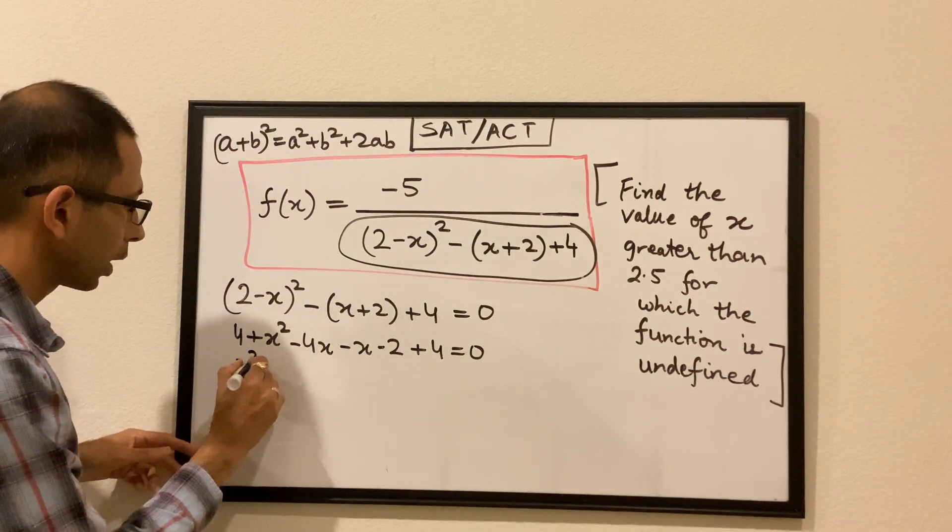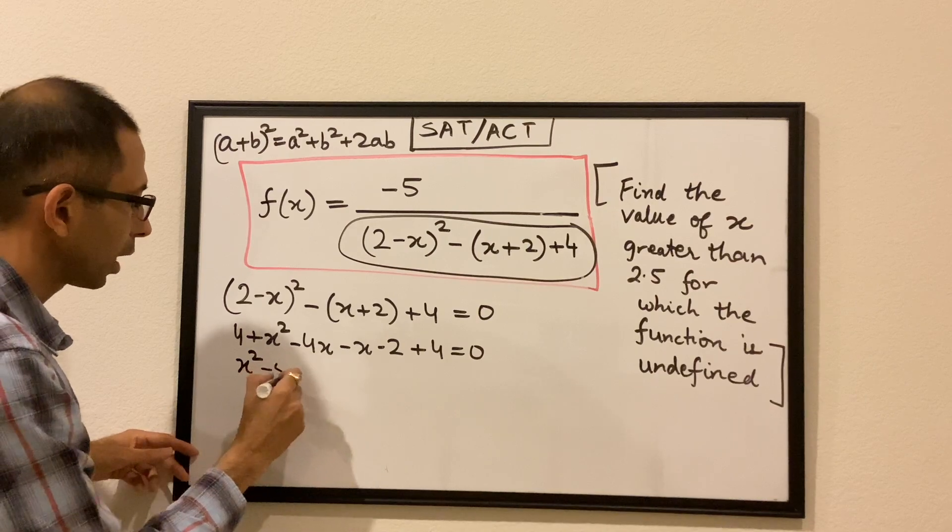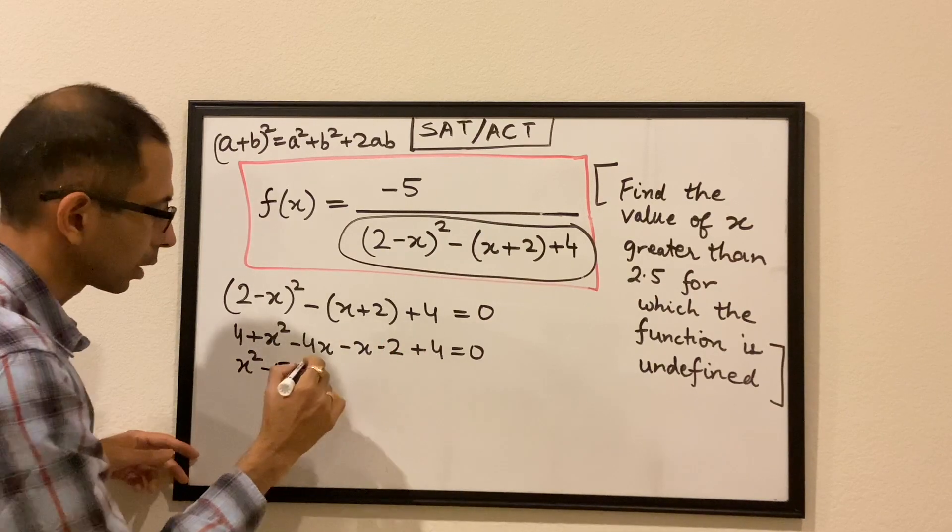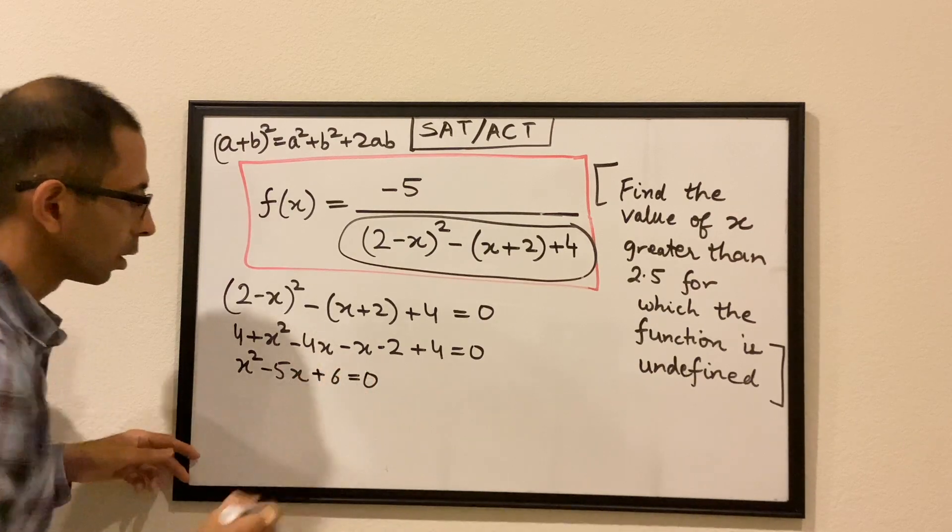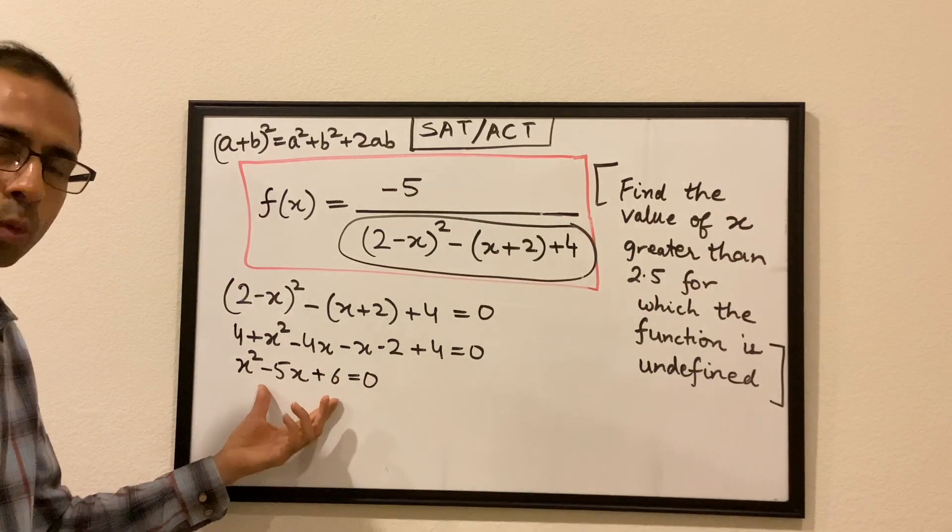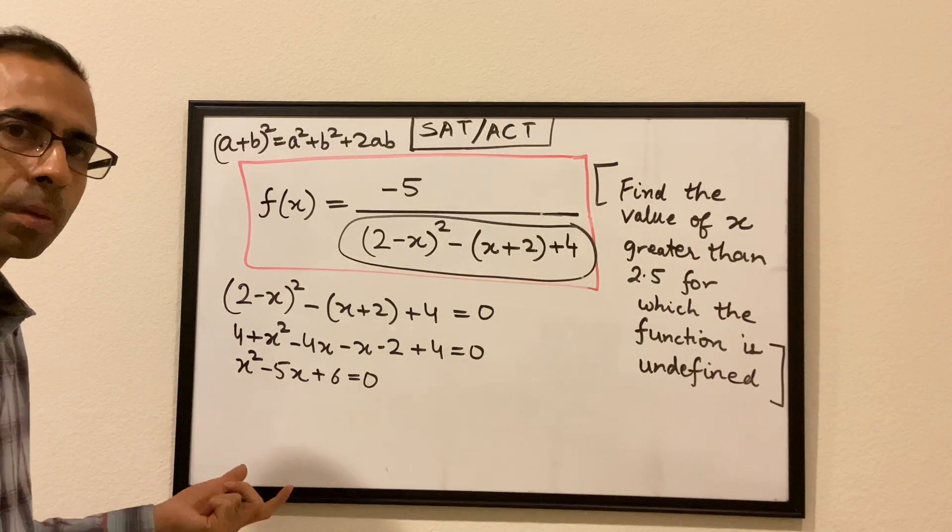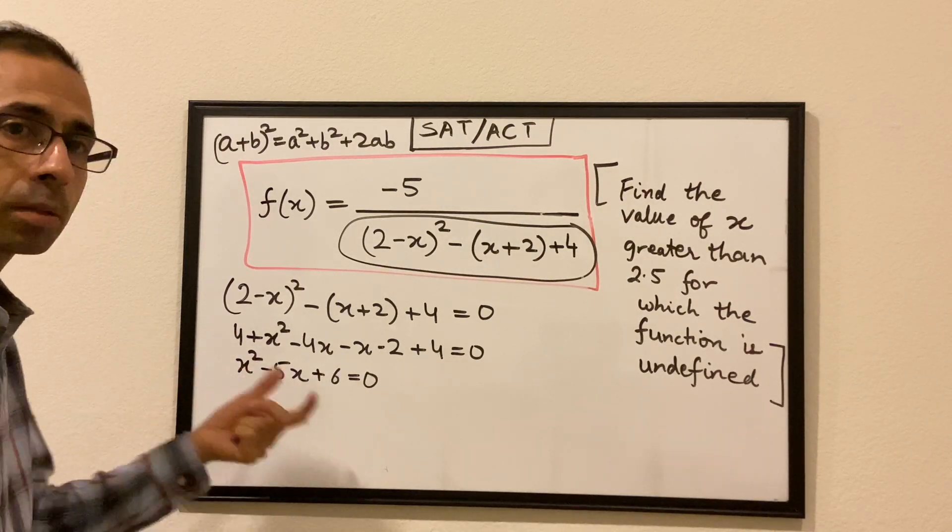We consolidate the terms, so we get x square minus 5x. 4 plus 4, 8 minus 2 is 6, so plus 6 is 0. So essentially we get this quadratic equation which we have to solve. Clearly we can use the grouping method. Here in this case minus 3 and minus 2.